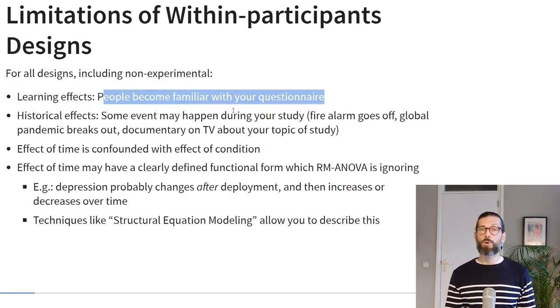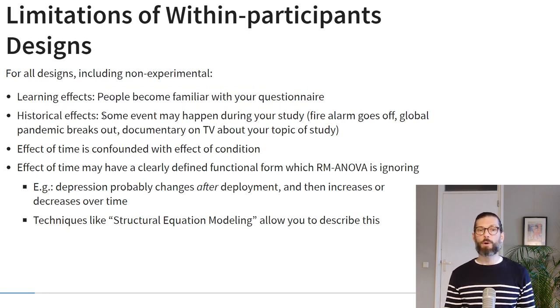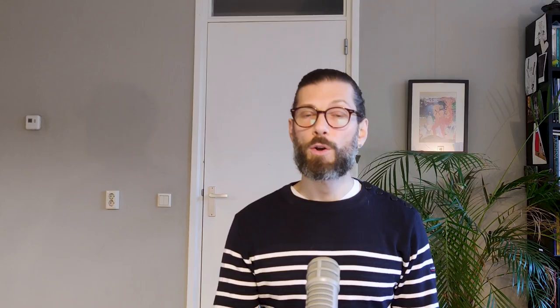There are other limitations of within-participants designs aside from order effects. For all within-person designs, including non-experimental ones, there may be learning effects, where people become familiar with your questionnaire and this influences how they respond. There might also be historical effects — for example, some event may happen during your study, like a fire alarm or a global pandemic. This happened to colleagues studying adolescent development who were conducting multi-million euro longitudinal panel data collections when COVID broke out, substantially influencing teenagers' development.